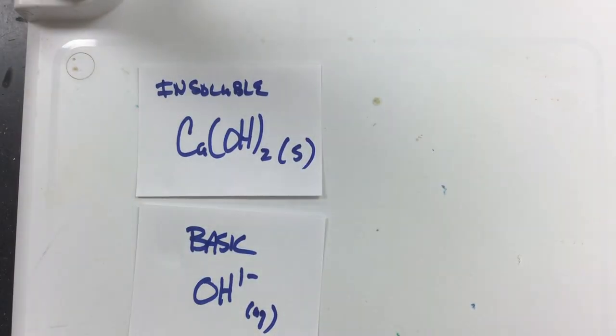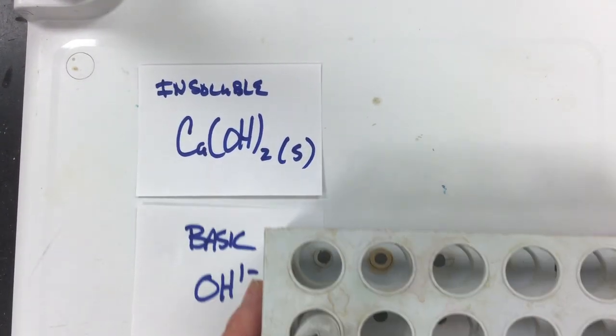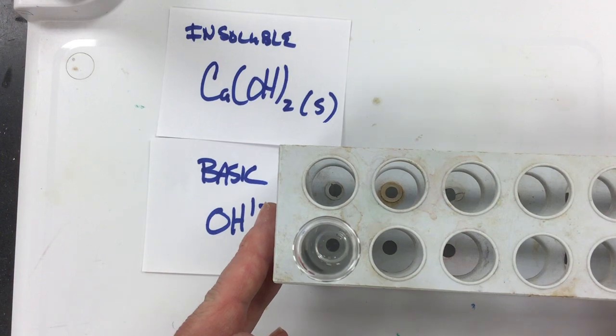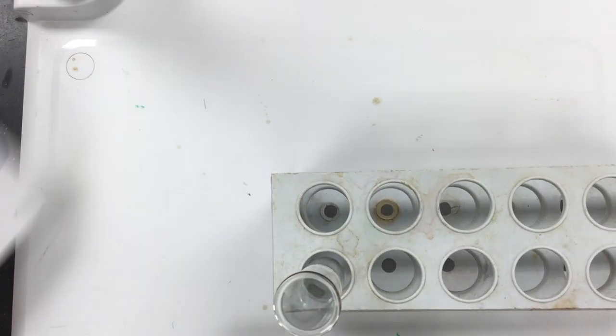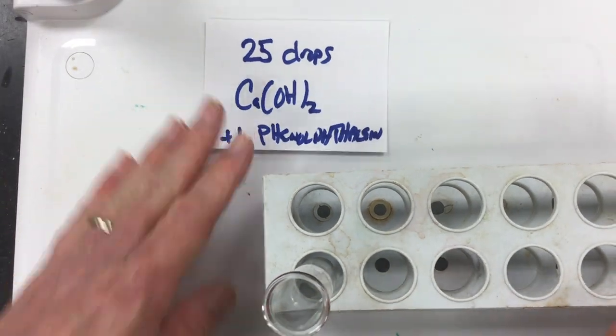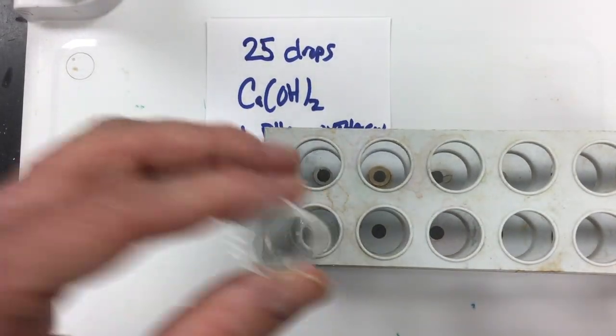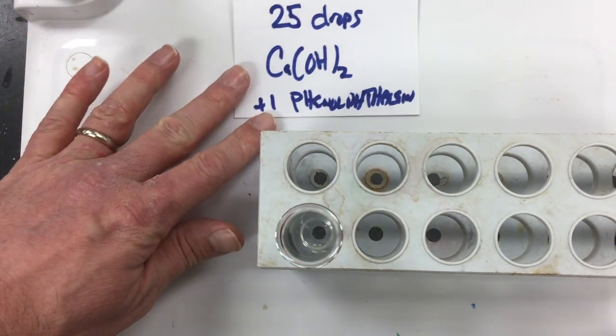So what I have done here is I have taken some of that water that is saturated with the hydroxide and the calcium ions there, and I have put it into a test tube here. And I have put 25 drops of this into the test tube. So here it is, you can see I got 25 drops of it in there already.